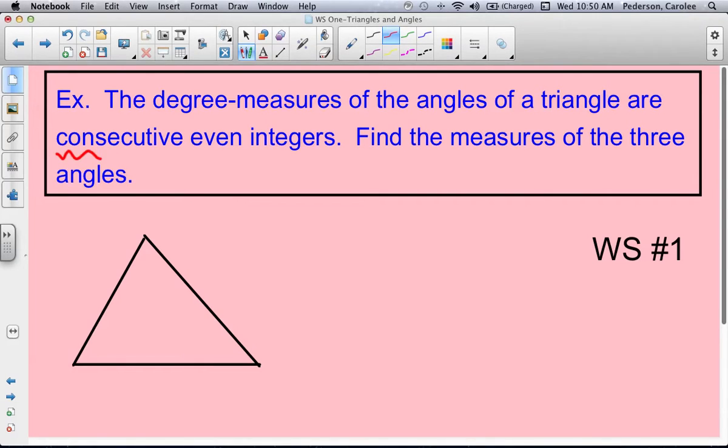So what consecutive means is one right after the other. Integers are one, two, three, four, five, six, seven, eight, nine, ten.